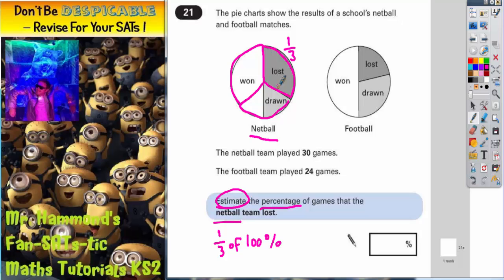Well 100 is not easy to split into three pieces, but 99 is. So if you split 99 into three pieces, you would get 33% in each piece. And that extra 1%, if you split one into three, you get 0.3 recurring. So actually, and you put a dot over three to show it recurs. So actually, a third of a hundred percent is 33.3 recurring percent.